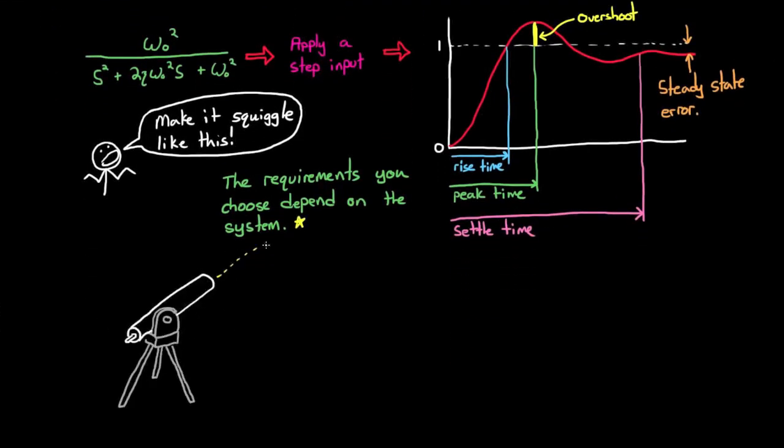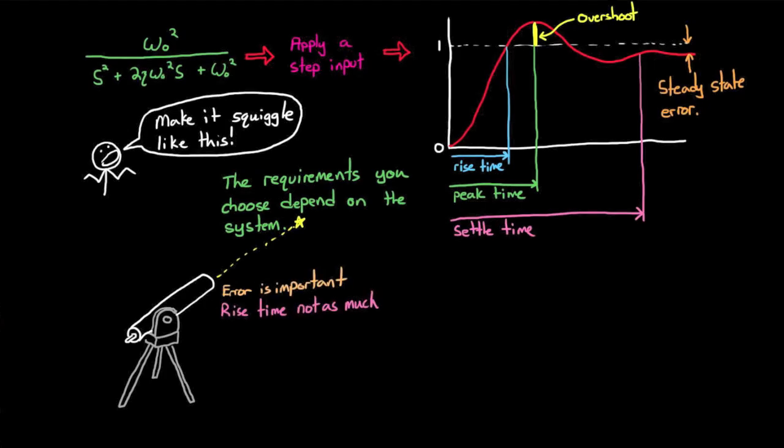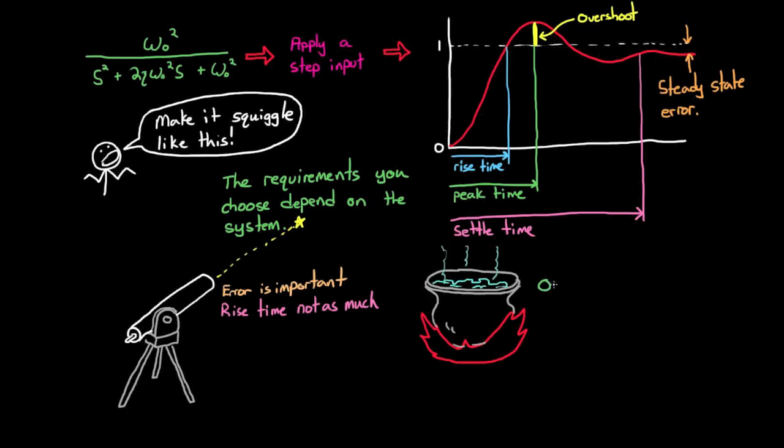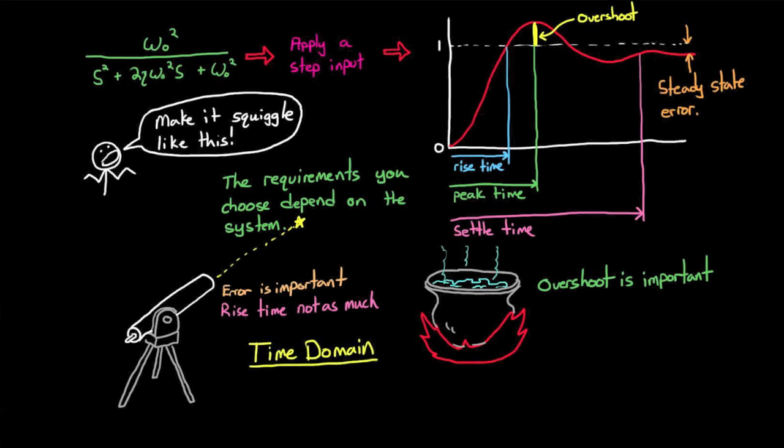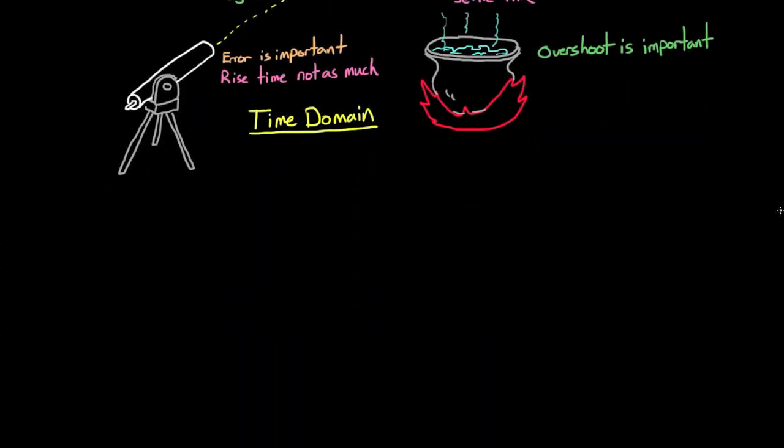Sometimes you'll get design requirements expressed as one or more of these performance measures, and what you are designing to depends on what is important for the system you are building. For example, a telescope drive system might really care about having zero steady-state error but not care so much about the amount of time it takes to slew the telescope, which is rise time, or the overshoot that happens while it's settling.